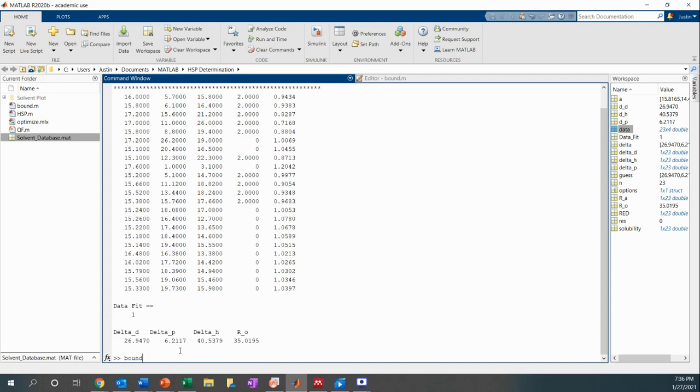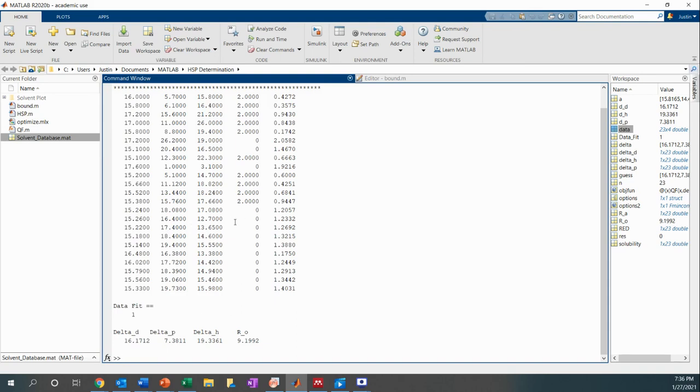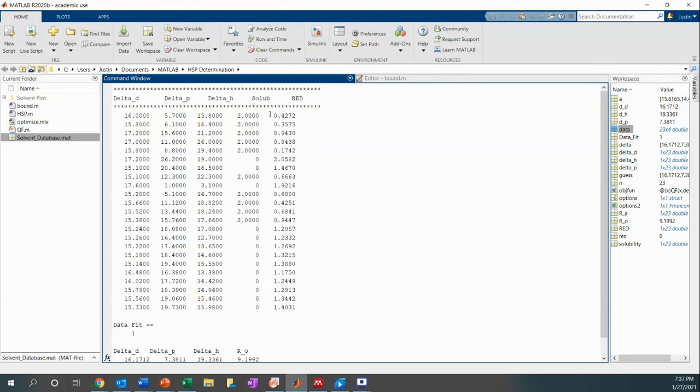So now I'm going to run the bound algorithm. And in fact, it's taking a few seconds, but it's a lot quicker than the HSP algorithm. And so we can see we have a lot better sized outputs right here, the radius is 9.1 rather than 30 or 40 as it was before. And then similarly, we also get relative energy distances here. And the data fit is one.